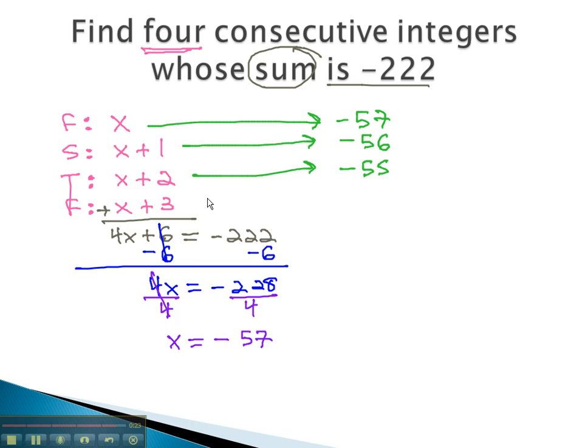Counting up towards zero, we have negative 56, negative 55, and finally, negative 54. You will notice, when we add these four numbers together, we end up with our sum of negative 222.